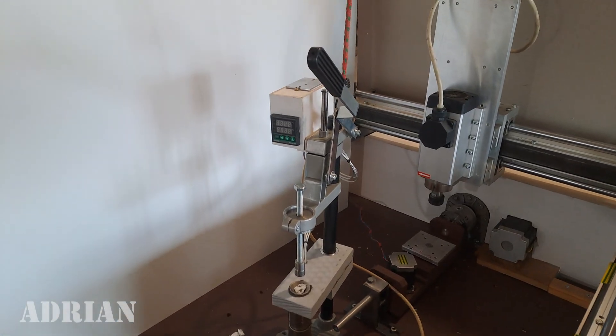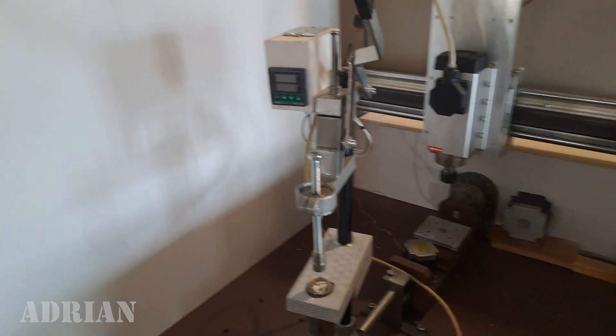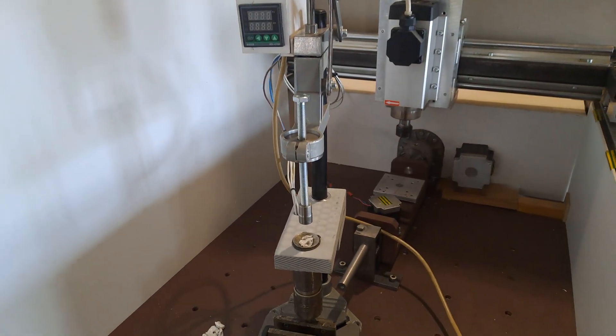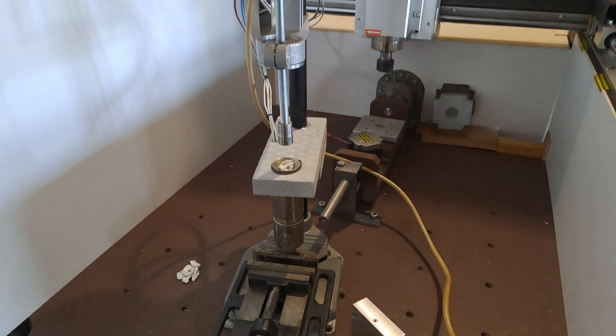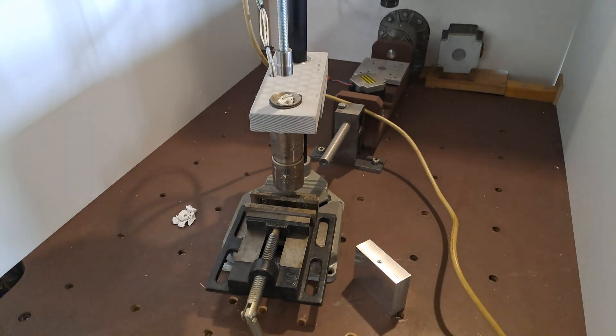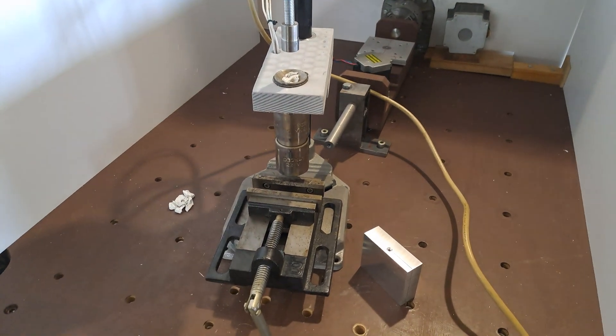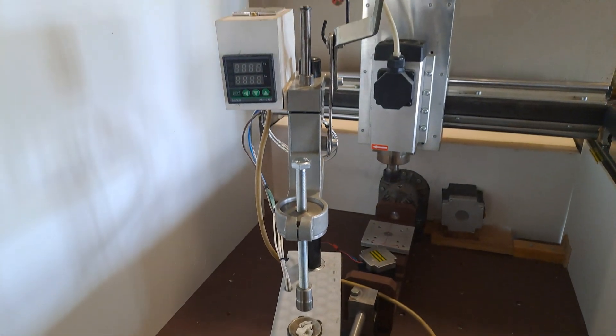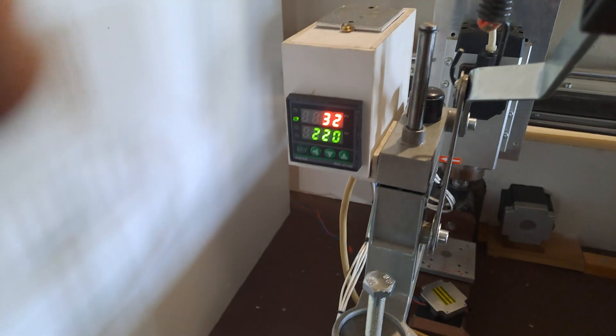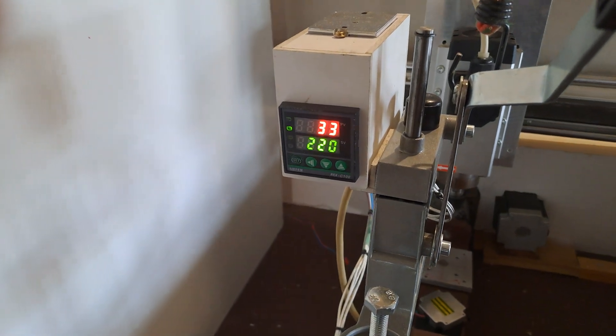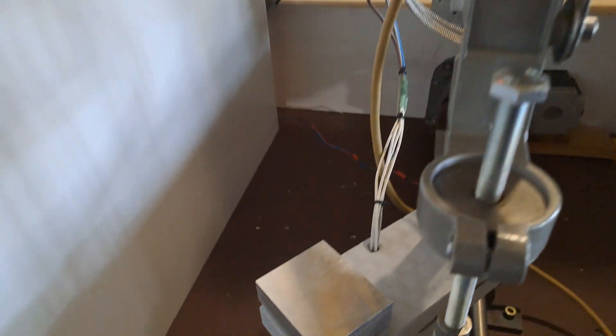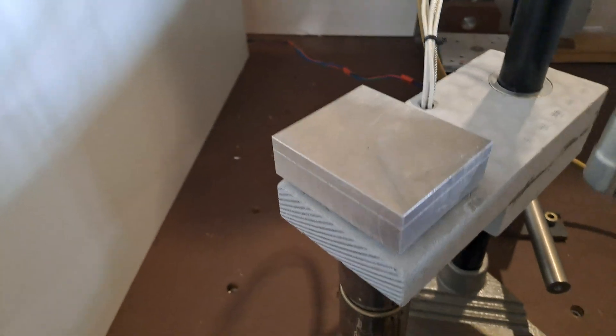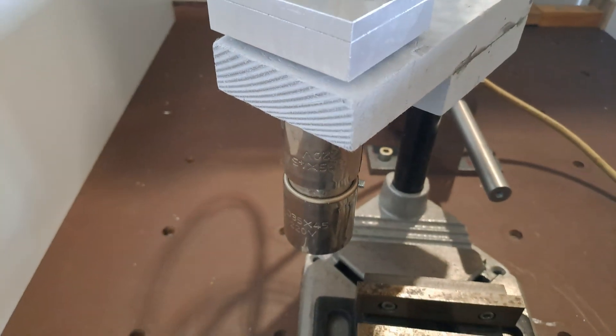This is my homemade manual desktop injection machine. Now it's plugged in and warming up to 220 degrees Celsius. I place the mold on top of the heating chamber to warm up a little bit.